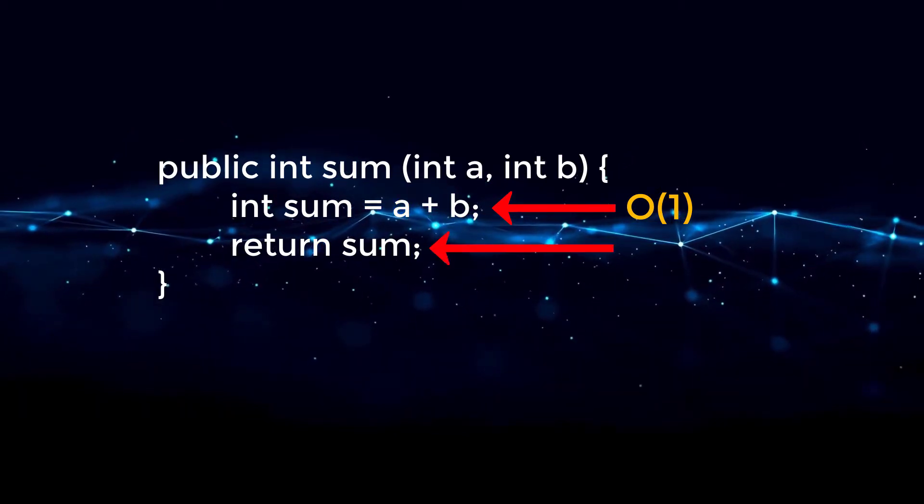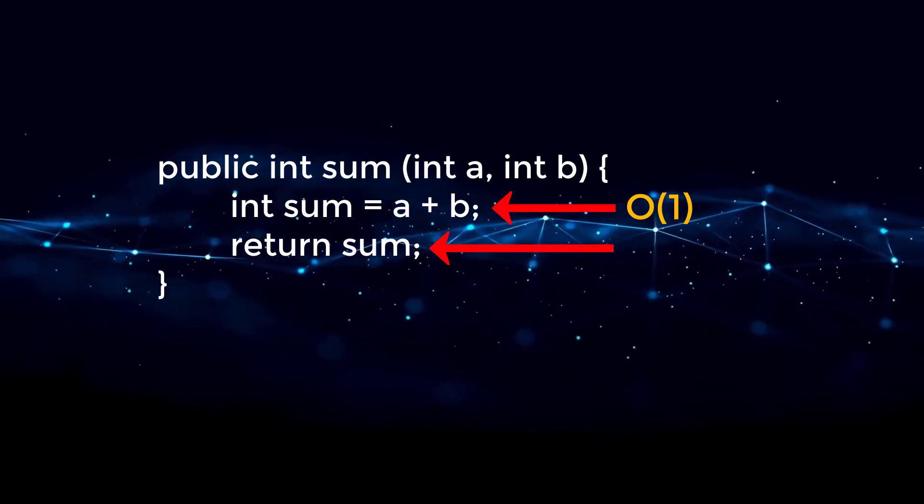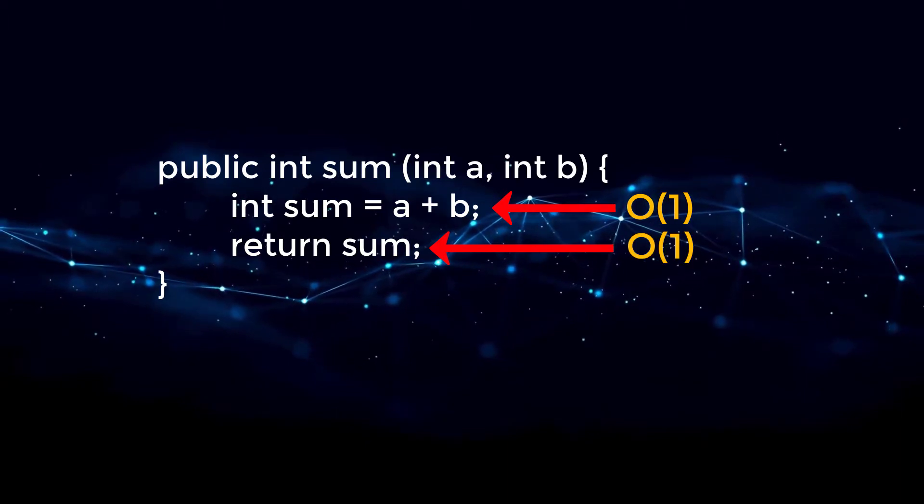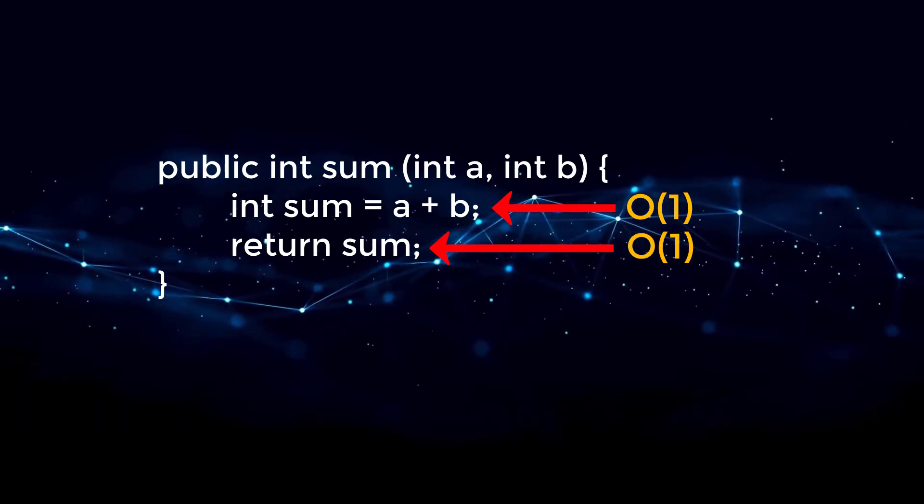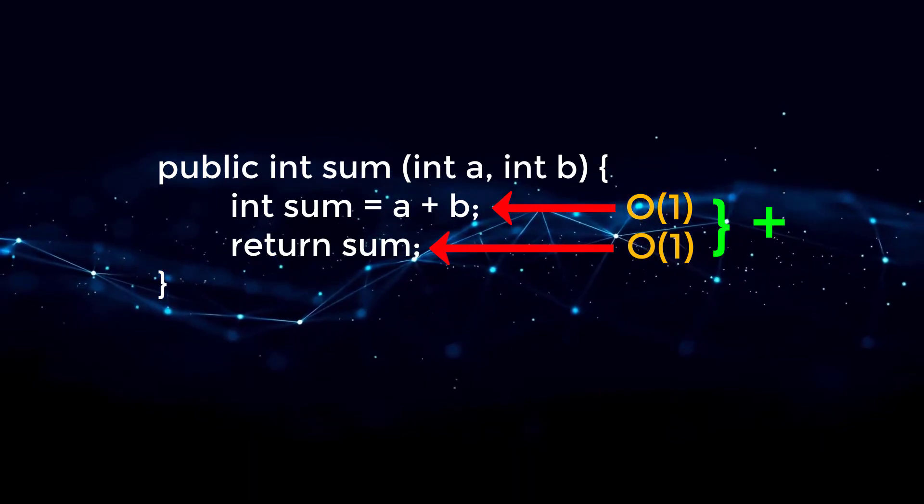As for our second line, just like with line one, we're just returning a variable. That will always take the same amount of time, so we can also consider that as constant time. Now, in order to evaluate the entire function, all we need to do is sum up each line.